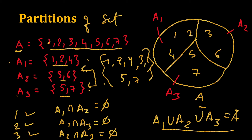We can also see this pictorially. Suppose A2 includes the element 4 — then A1 and A2 would have 4 in common, so that would not be a valid partition. Similarly, if there is another set A4 which is the empty set, then the first condition would not be satisfied. That's all about disjoint sets and partitions of a set. See you in the next video, thank you.